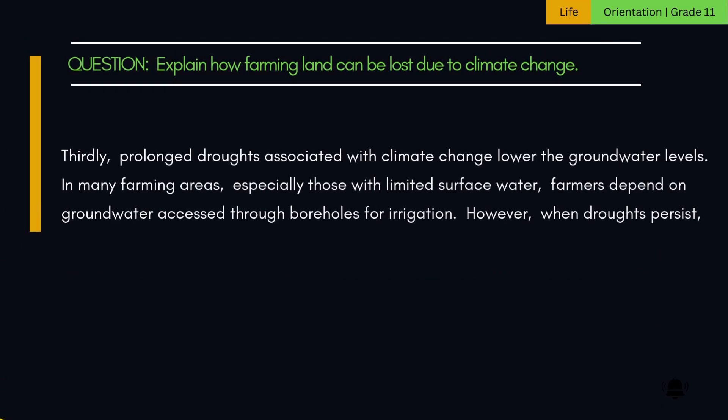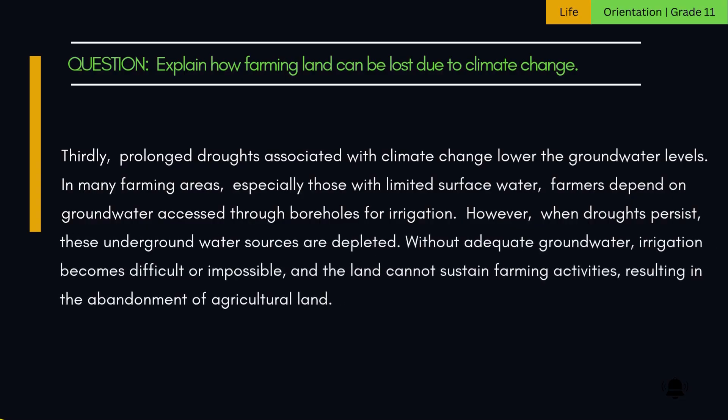Thirdly, prolonged droughts associated with climate change lower the groundwater levels. In many farming areas, especially those with limited surface water, farmers depend on groundwater access through boreholes for irrigation. However, when droughts persist, these underground water sources are depleted. Without adequate groundwater, irrigation becomes difficult or impossible, and the land cannot sustain farming activities, resulting in the abandonment of agricultural land.